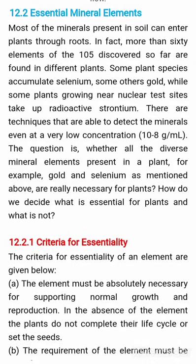Section 12.2: Essential mineral elements. Most of the minerals present in soil can enter plants through roots. In fact, more than 60 elements of the 105 discovered so far are found in different plants. Some plant species accumulate selenium, some others gold, while some plants growing near nuclear test sites take up radioactive strontium. There are techniques that are able to detect minerals even at a very low concentration of 10⁻⁸ g per milliliter. The question is whether all the diverse mineral elements present in a plant — such as gold and selenium — are really necessary for plants.